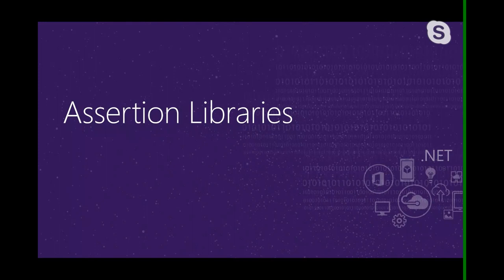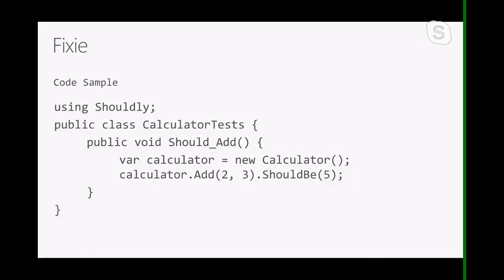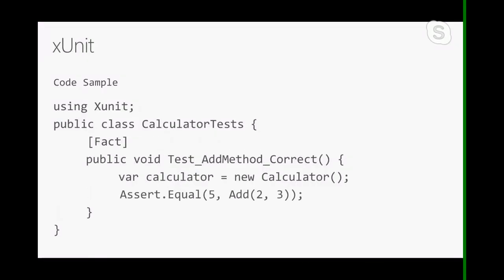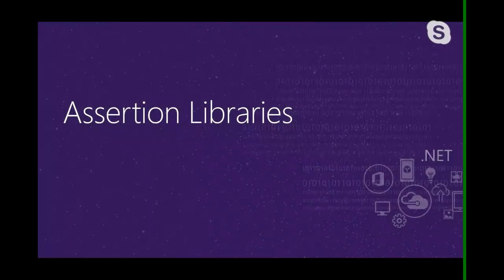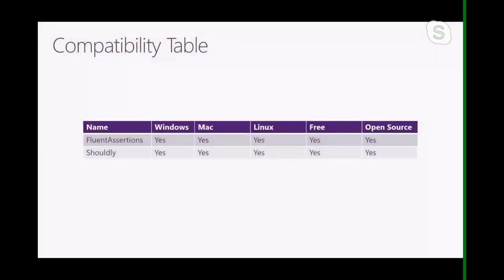Next up are assertion libraries. Assertion libraries allow you to assert that various conditions in your tests have been met. For many people there's no need for a separate assertion library because most unit test frameworks come with those out of the box, like xUnit's assert.equal. However, there is a whole class of tools purely focused on letting us easily assert that various conditions are met.